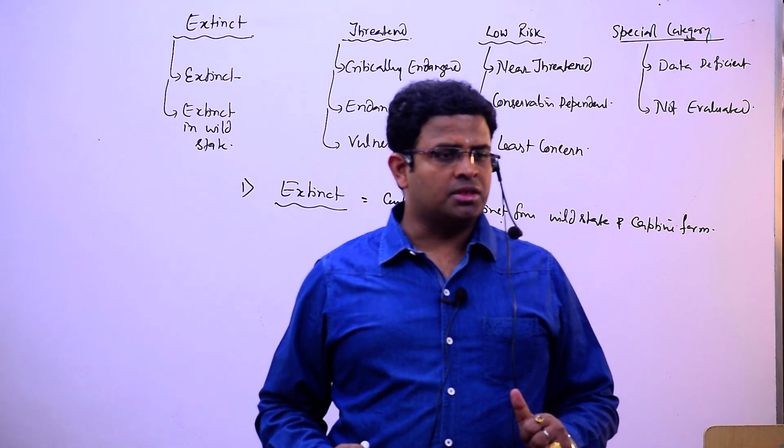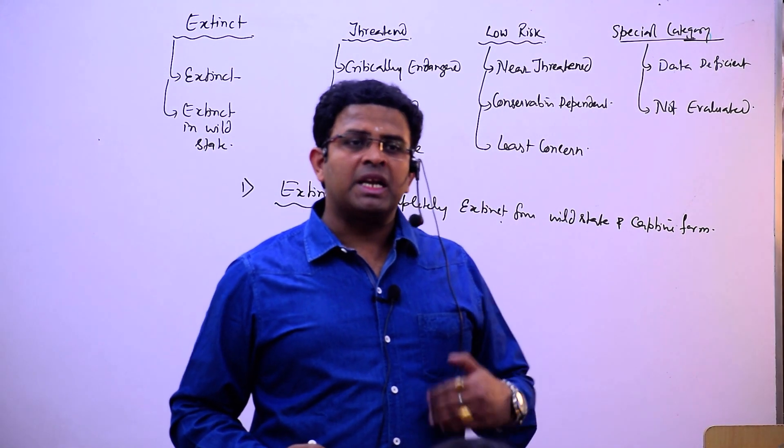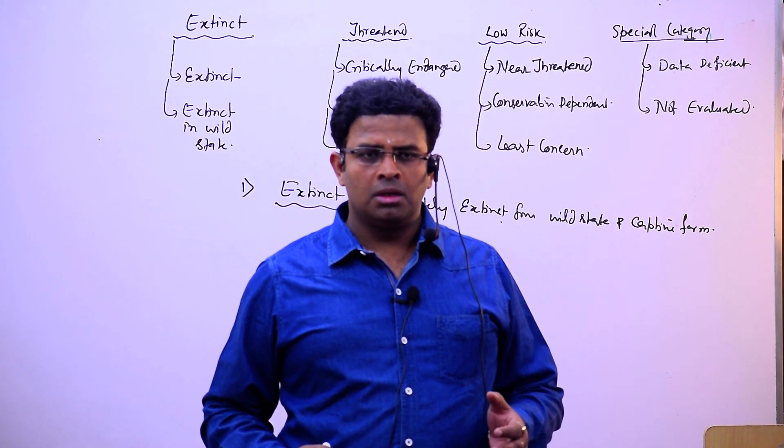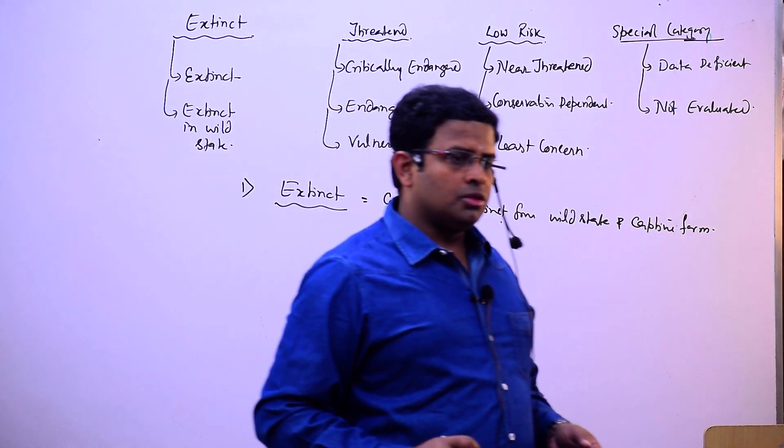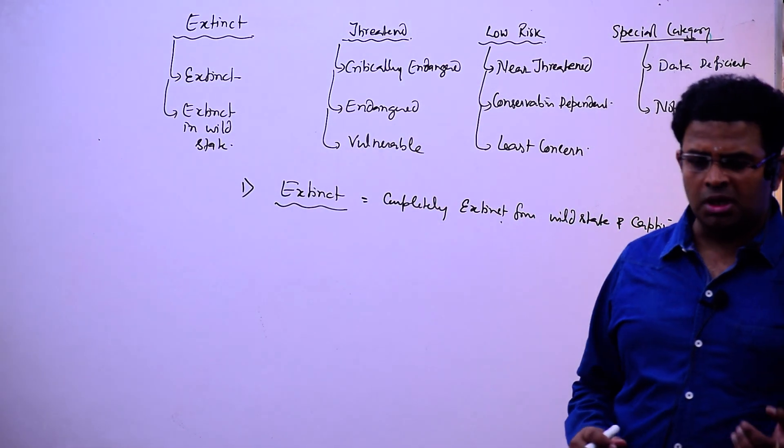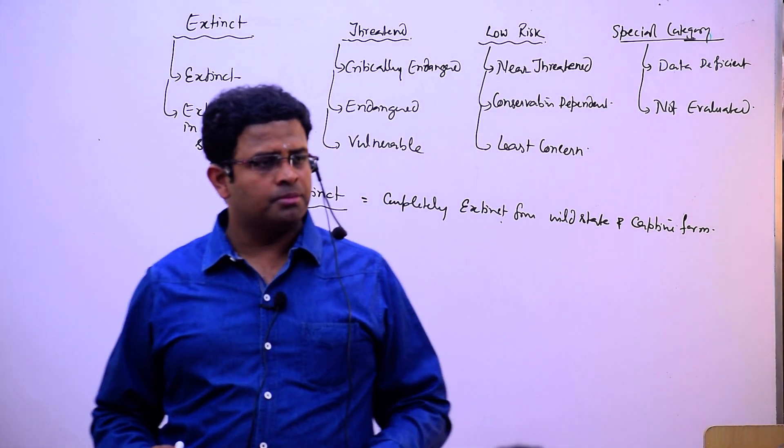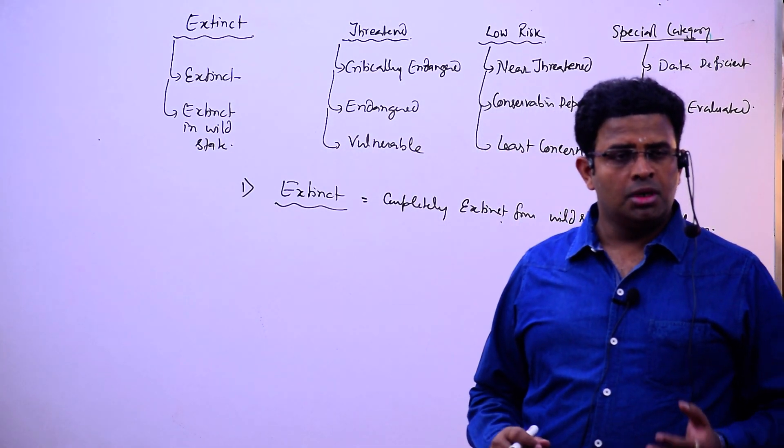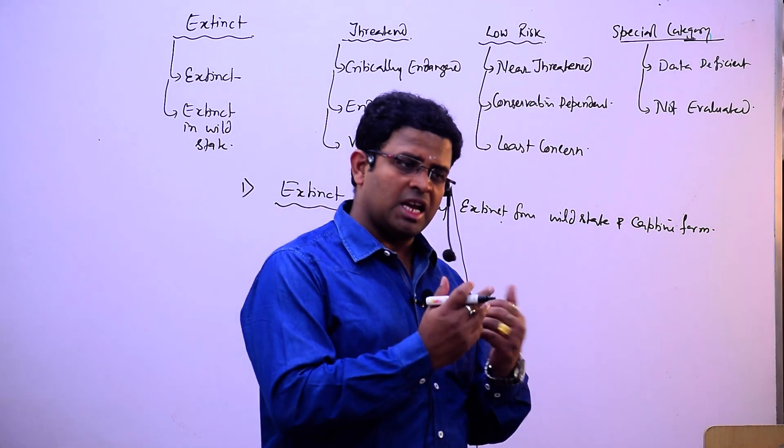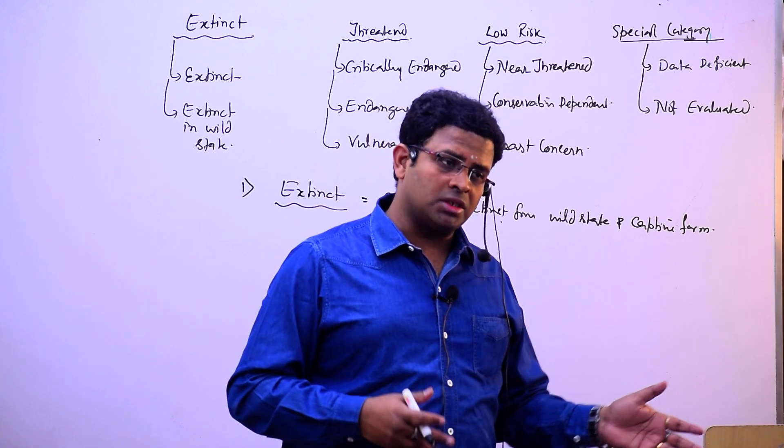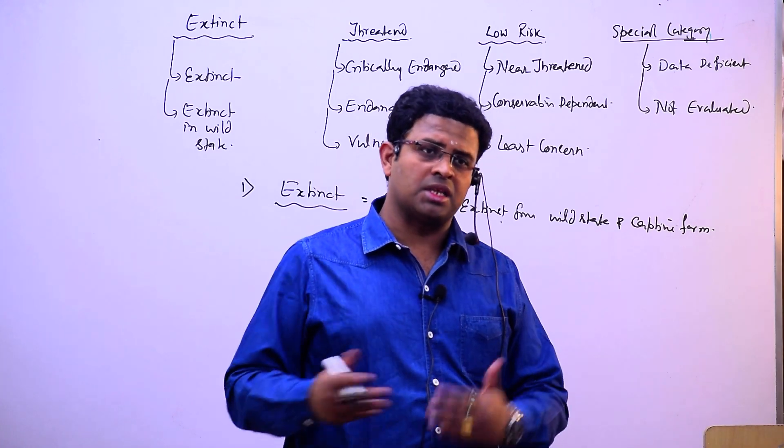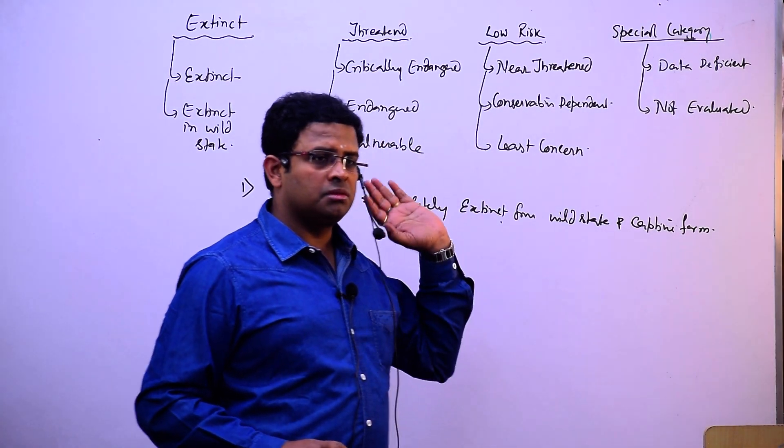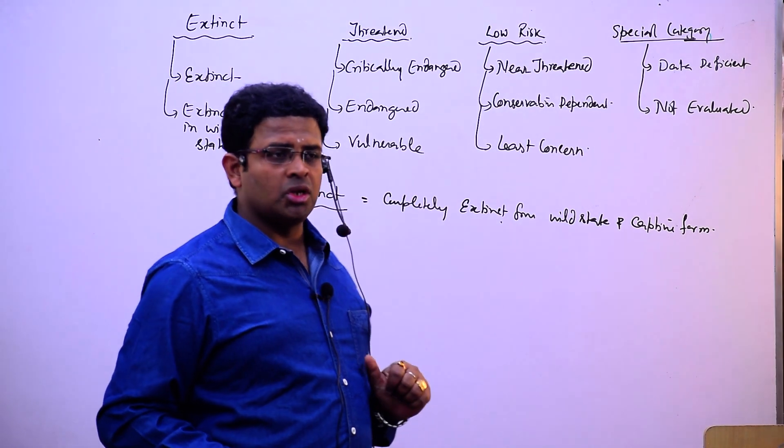Captive form means captured - like pet animals in circus, zoos, and there. Zoos are zoological gardens where animal species are preserved and conserved. Botanical gardens where plant species are preserved and conserved. In the forest it has been finished, but even in zoological garden, botanical garden, circus - anywhere it is also not existing. It is completely wiped out from the world.